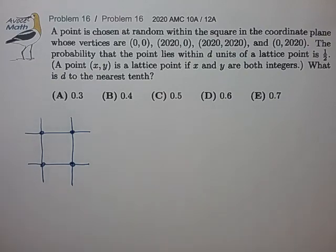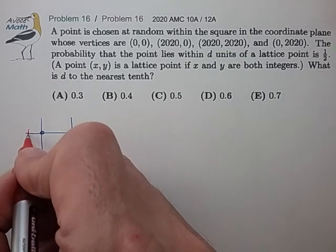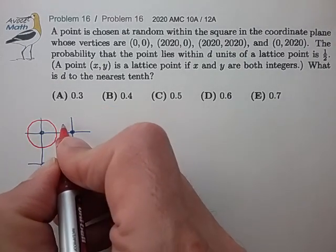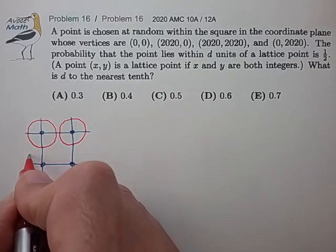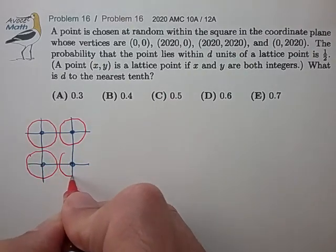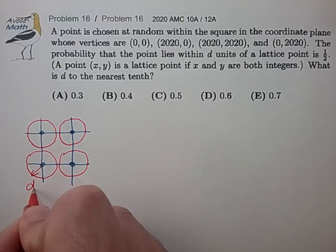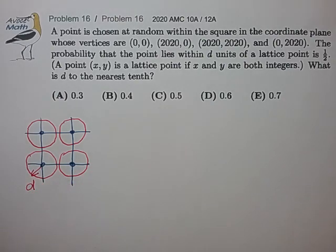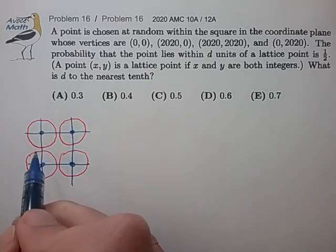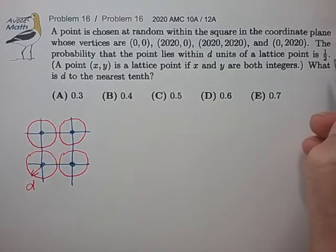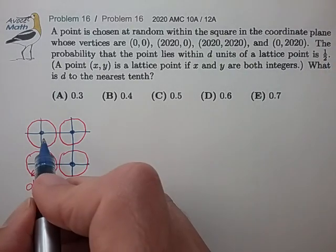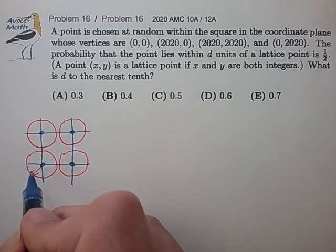So the problem specifies that there's a region around each lattice point that is within a distance d of the lattice point. And if we drop a point randomly on this plane, there's a one-half probability that it lands within the red zone d.